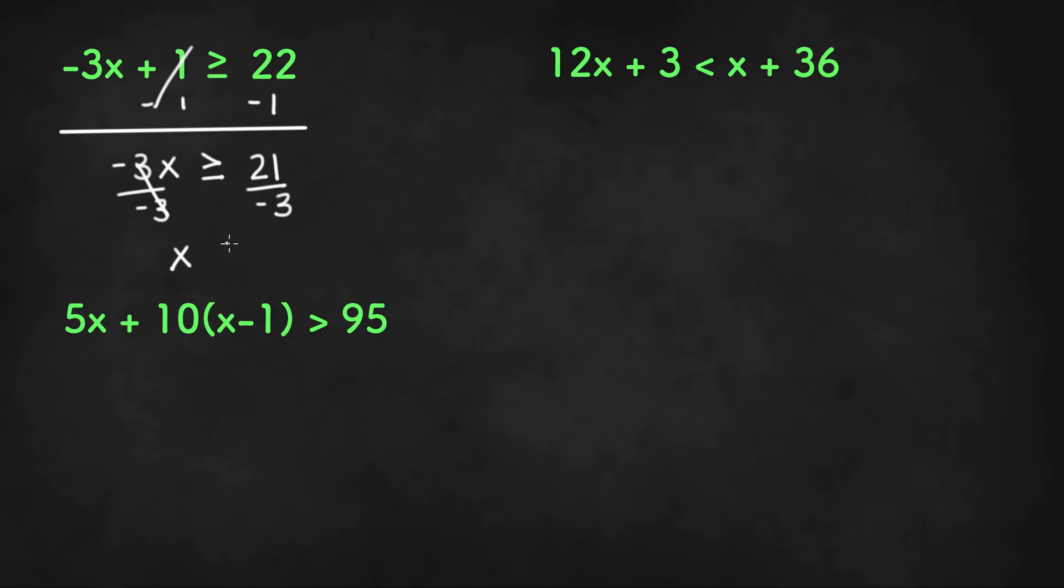So it says x is less than or equal to 21 divided by negative 3 or negative 7, which will be our final solution for the first example.